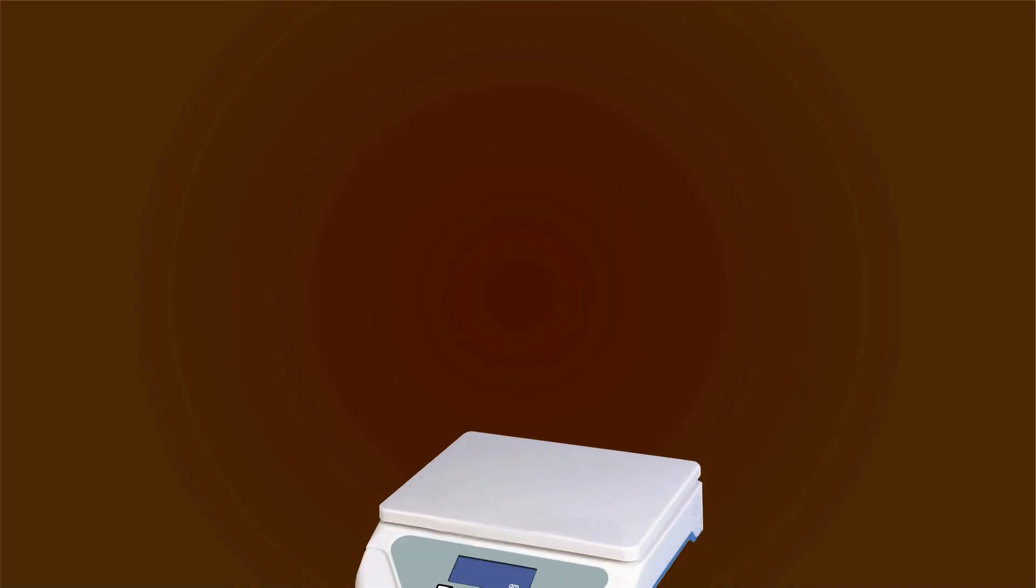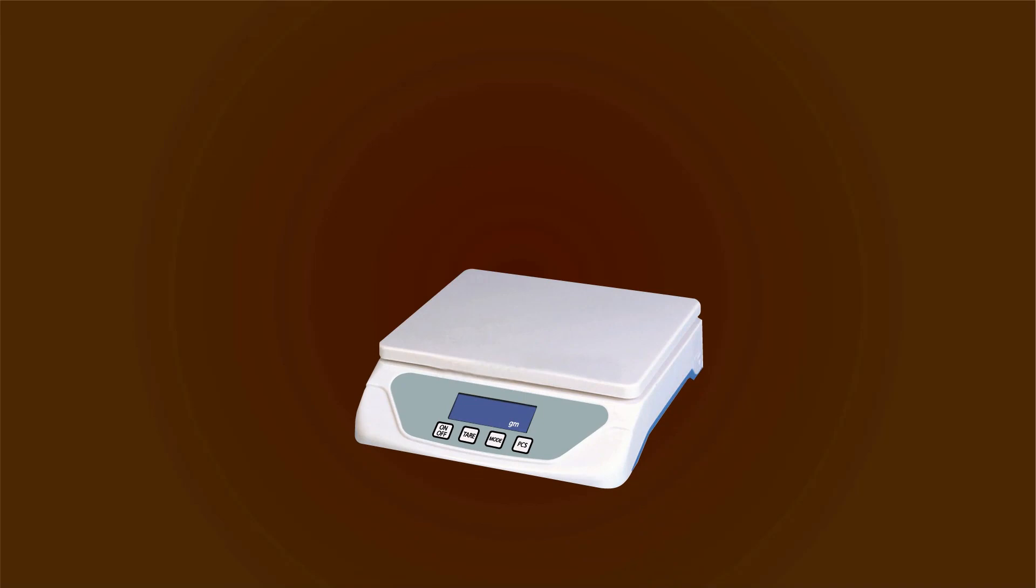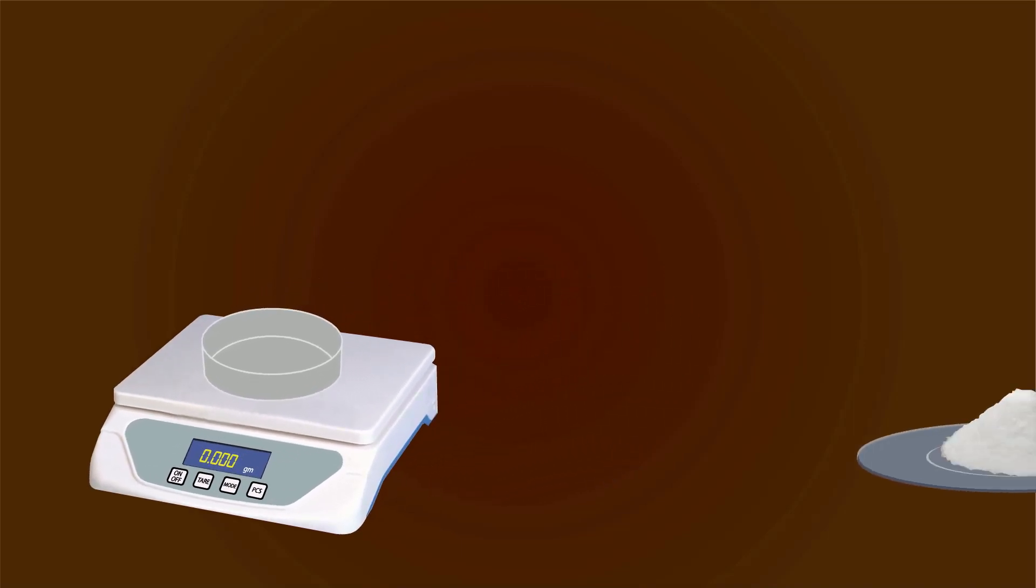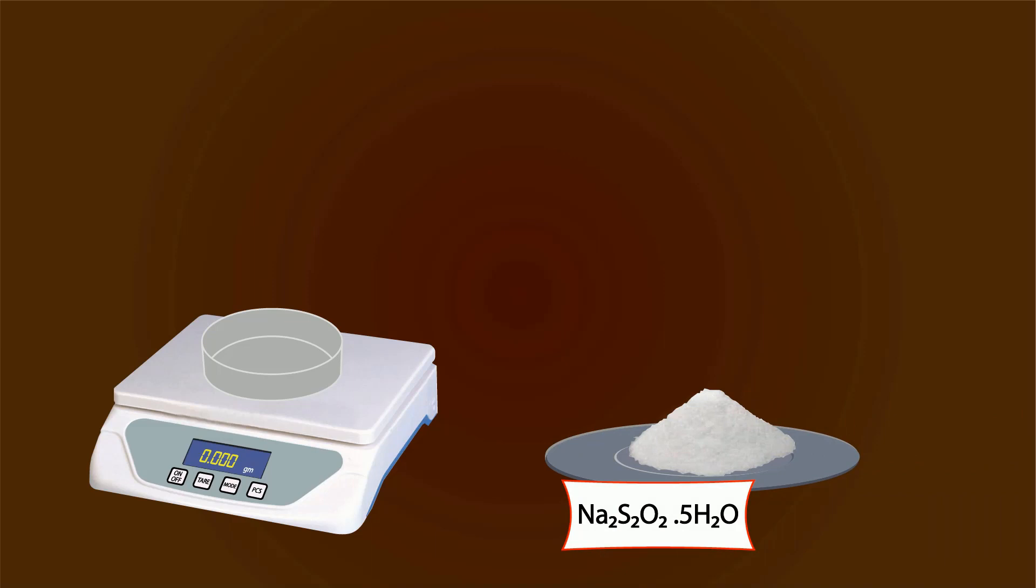Let's start preparation. First of all, take a weight balance and power it on. Now put a petri dish on it and tare it down. You can add sodium thiosulfate into the petri dish with the help of a spatula. Start adding and measure precisely as 4.964 grams.